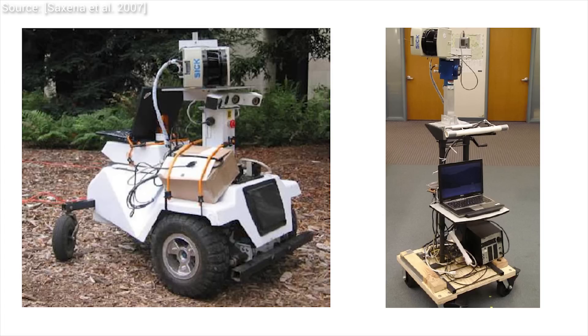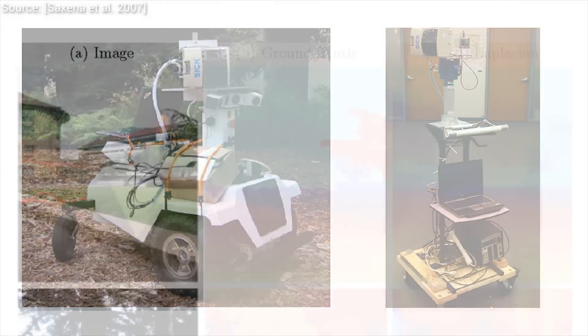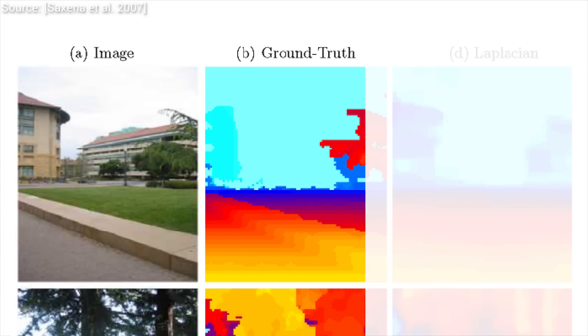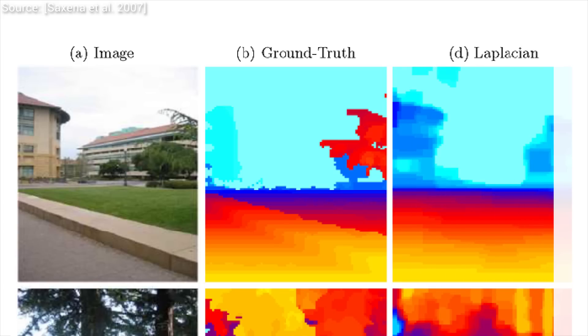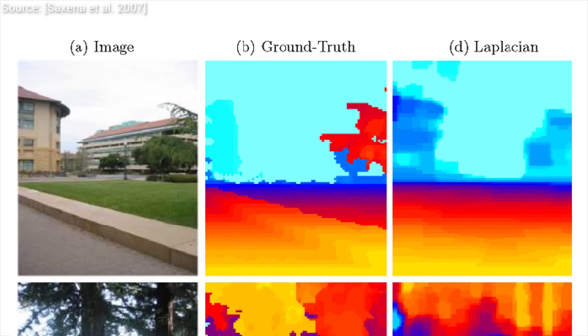The final goal is that we provide a photograph for which the depth information is completely unknown and we ask the algorithm to provide it for us. Here you can see some results. The first image is the input photograph, the second shows the true depth information, and the third image is the depth information that was created by this technique.